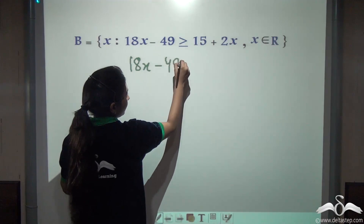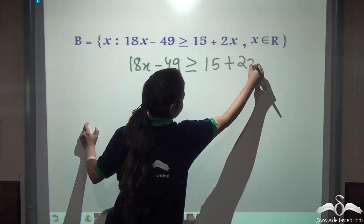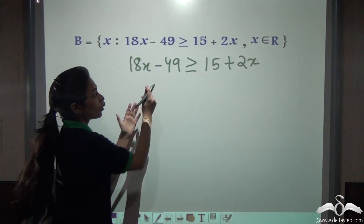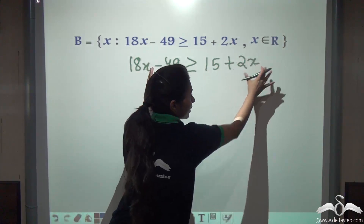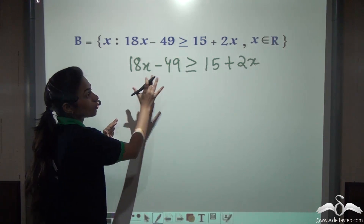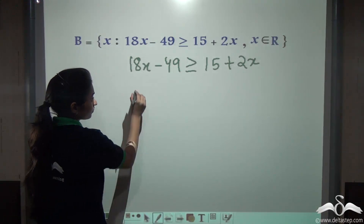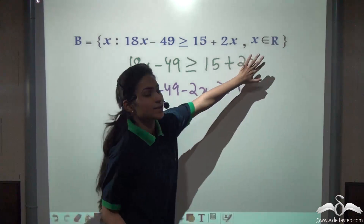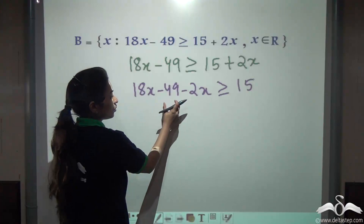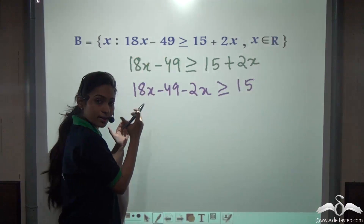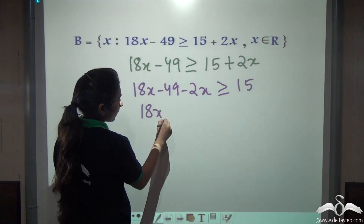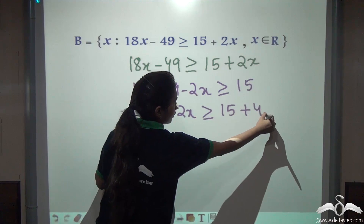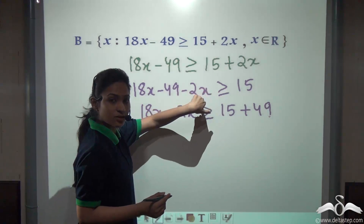We will copy this inequation separately and solve: 18x minus 49 is greater than or equal to 15 plus 2x. I will bring both x terms to one side and the numerical parts to the other. I subtract 2x from both sides, so on the right side 2x minus 2x becomes zero, and here we get 18x minus 2x. So that gives us 18x minus 49 minus 2x is greater than or equal to 15. Now I take minus 49 to the other side by adding 49 to both sides.